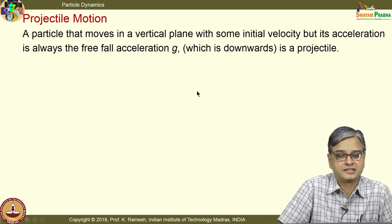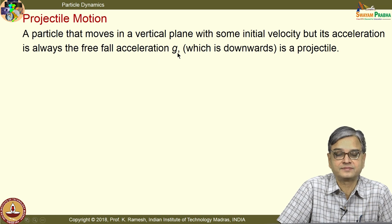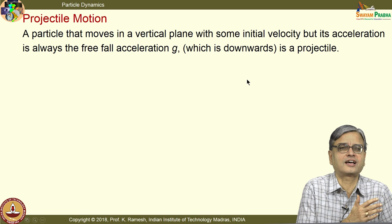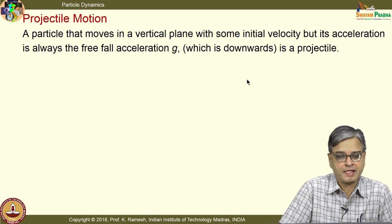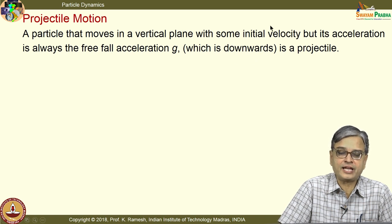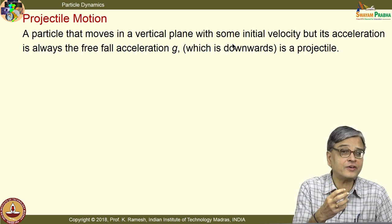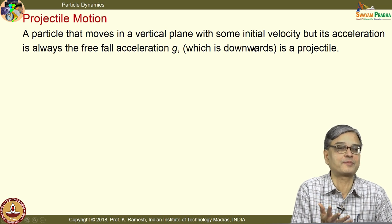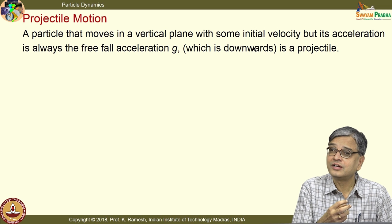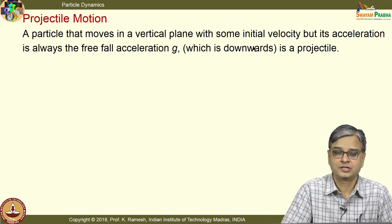One of the simplest things you come across in particle dynamics is projectile motion — a particle that moves in a vertical plane with some initial velocity, but its acceleration is always the free-fall acceleration g. You have learnt it thoroughly and solved thousands of problems in your earlier exposure. Nevertheless, we will have a quick overview. In dynamics, you must visualize: when I say it has some initial velocity, how did that initial velocity come about? Think about it — that will help you model real problems appropriately.